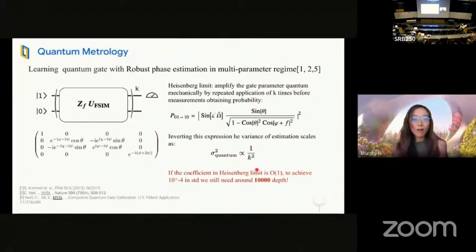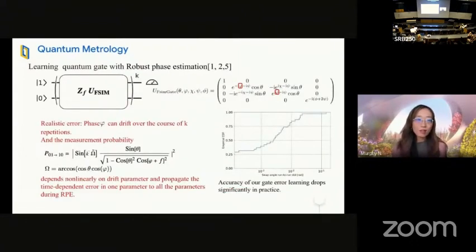This seems fine, but most of the prior arts do not really care about the optimality of the scaling, which is the coefficient multiplicative factor in front of the scaling. In fact, the robust phase estimation and periodic calibration, they all have an order of magnitude 1 in this coefficient. That means if we do want to achieve, say, 10 to minus 4 in standard deviation of our metrology tool, we would need around 10,000 repetitions. This is beyond any existing quantum computer's capability.